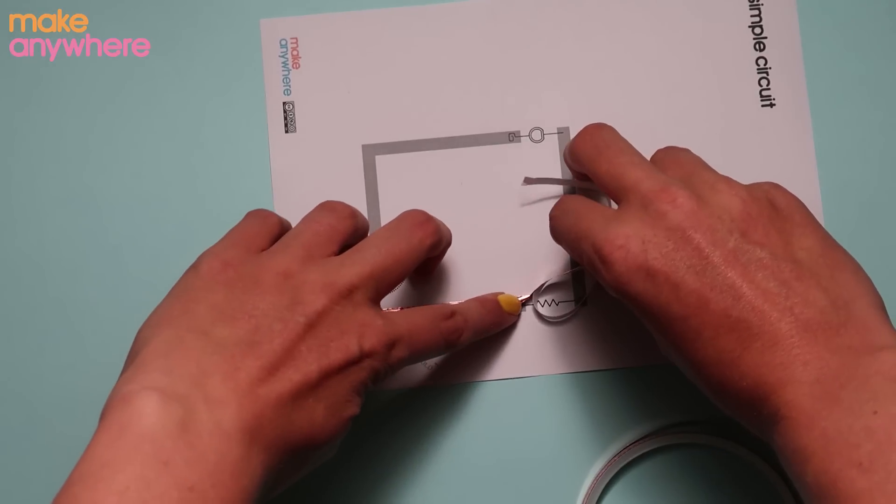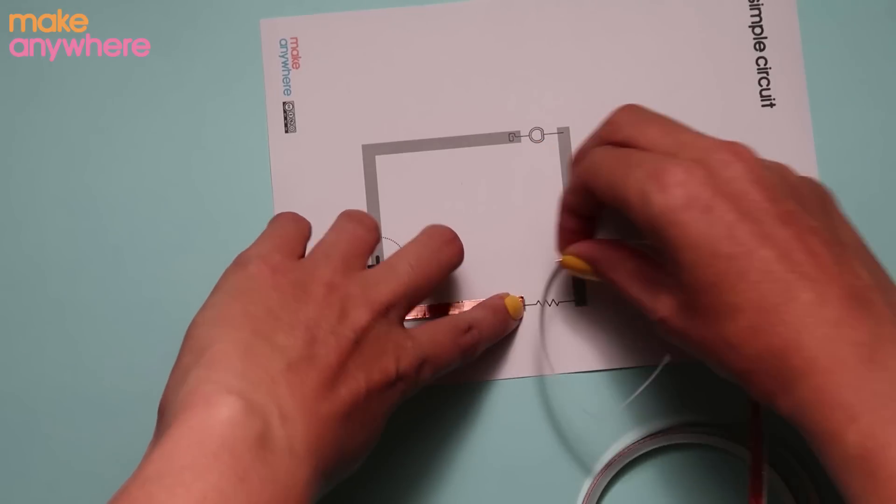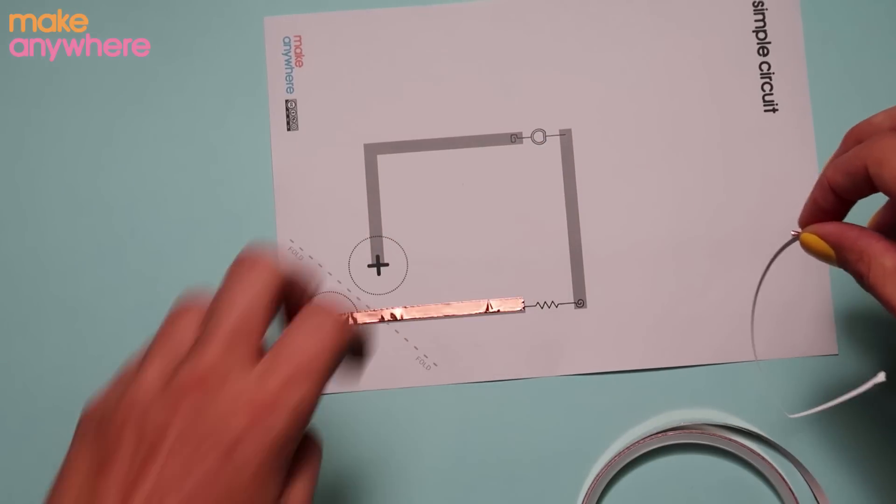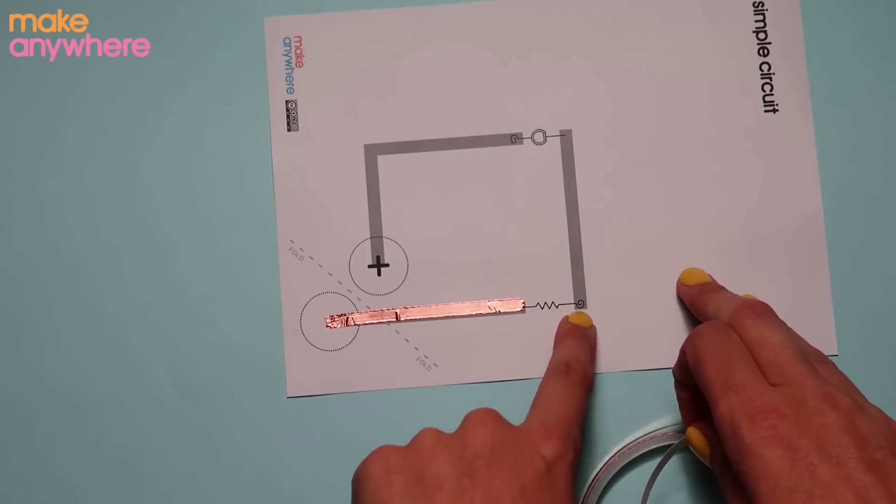When we get to the end, put your finger on and then rip or use your scissors to cut. Our next line goes from here across.